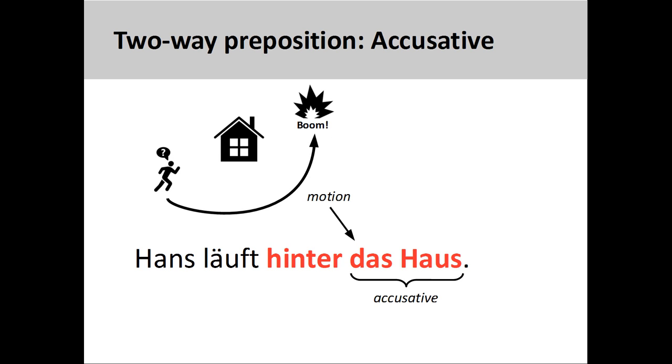In German, the object of a two-way preposition makes the meaning clear. If the object is in the accusative case, motion is indicated. Position is indicated if the object is in the dative case.